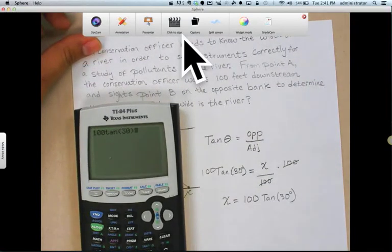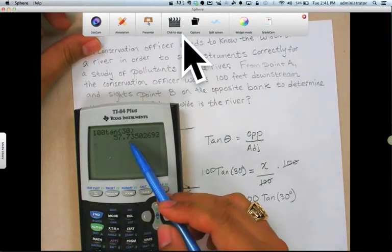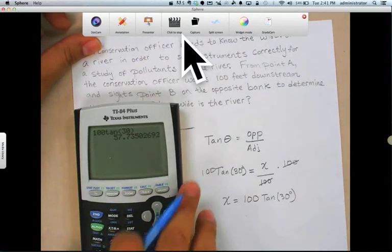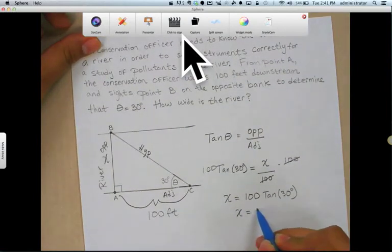We may get a decimal answer. Let's go ahead and see what we get. So we get about 57.74, rounded off to the nearest foot, 58 feet. So how wide is the river then? Well, X equals 58 feet.